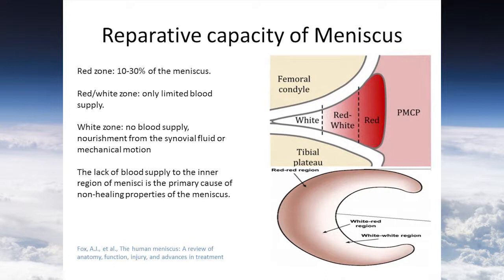Let's look at the reparative capacity of the meniscus. It has a non-uniform blood supply. Usually the blood vessels will penetrate into the outer 10 to 40% of the meniscus, and this region is called the red zone. For the red-and-white zone there is only limited blood supply. The inner part of the meniscus usually has no blood supply — nourishment comes from the synovial fluid or mechanical motion.